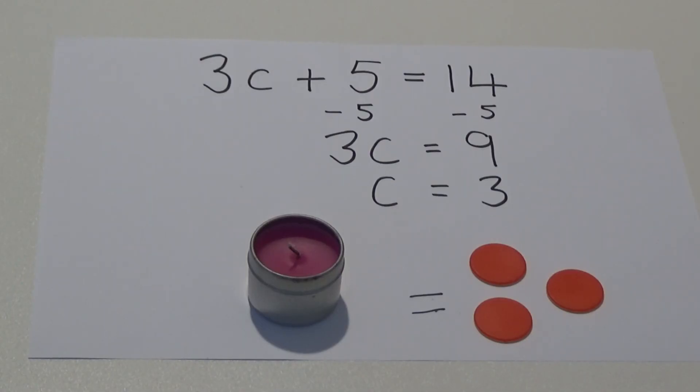So if 3C plus 5 equals 14, C must be equal to 3. We can test this by putting 3 into the equation. 3 times 3 is 9 plus the 5 equals 14.